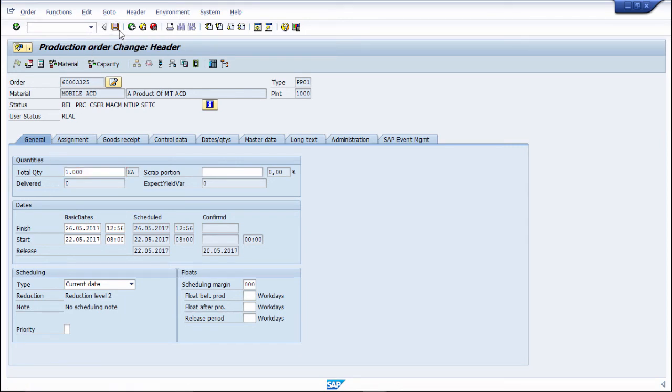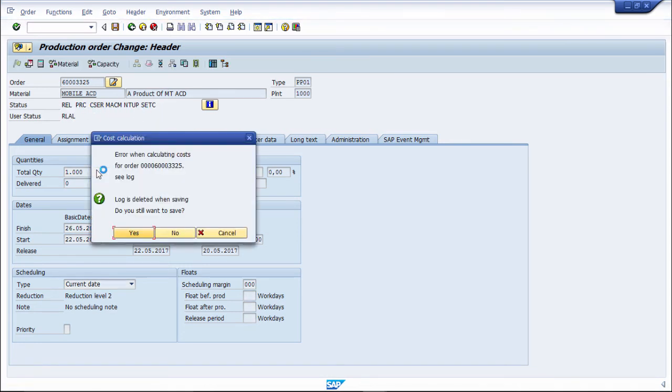Then I will go just save. Release has already been done, but you are changing this quantity. Just see if material is available or not, then that is available. This is the status showing as production order, and now it is changing from 100 to 1000.